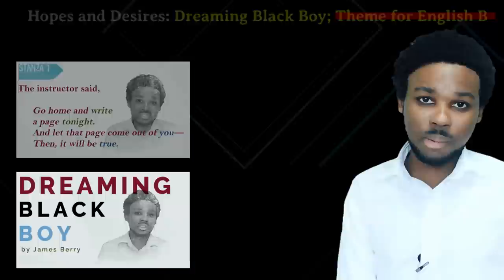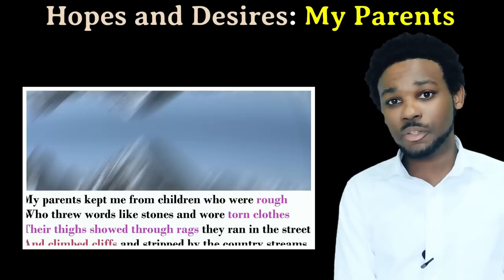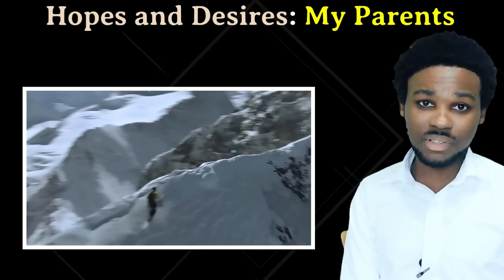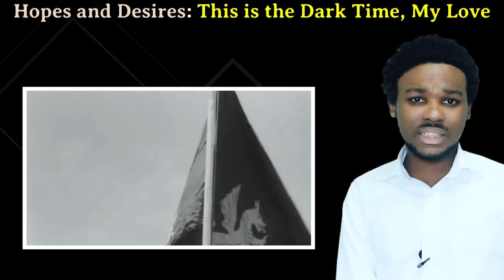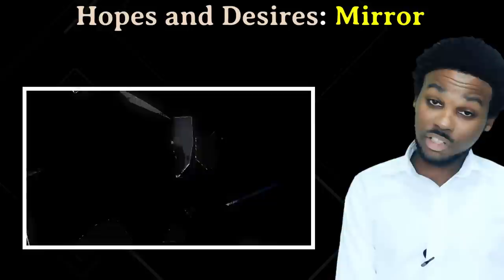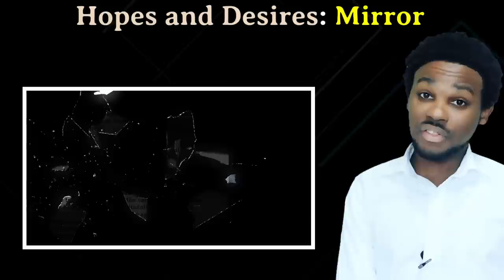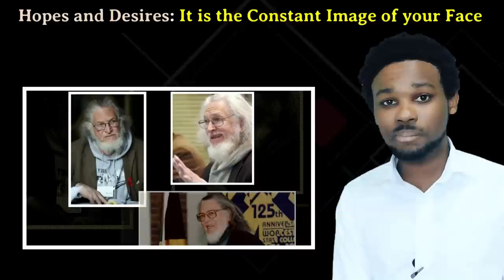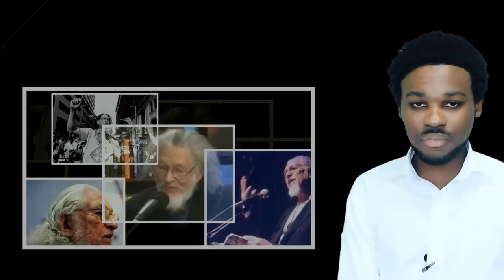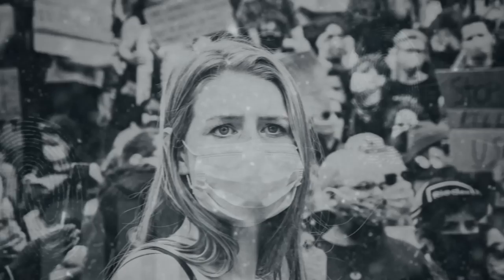In My Parents, the speaker desires to be accepted by the other children. He wants to distance himself from the identity his parents have given him. In This is the Dark Time My Love, the speaker expresses a desire to survive this turbulent time and wants his country to overcome this dark period and get back to brighter days. In Mirror, the speaker desires to regain her youth — she wants to be young and beautiful. It is the Constant Image of Your Face is about a man torn between two countries; he desires to please both without betraying or offending either.